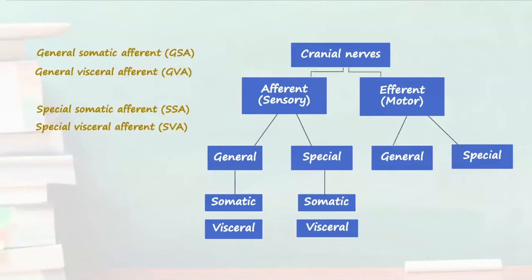If we now consider general and special efferent fibers, just like before these can also be categorized into somatic and visceral efferent nerves. Somatic efferent nerves carry information to the skin or skeletal muscle whereas visceral efferent nerves carry information to internal organs such as smooth muscle, cardiac muscle and glands. As we've mentioned previously these visceral efferent fibers are linked to the autonomic nervous system.